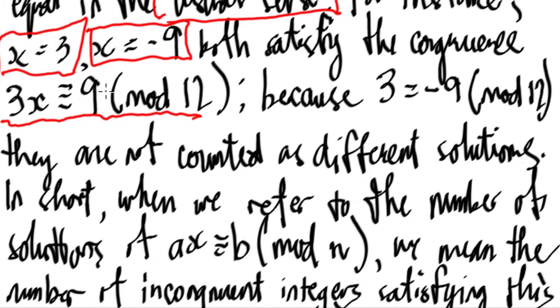we have 3 times 3, 9 is congruent to 9 mod 12 which is true, and also negative 9 times 3 gives us negative 27 is congruent to 9 mod 12. So because 3 and negative 9 mod 12 they are not counted as different solutions.